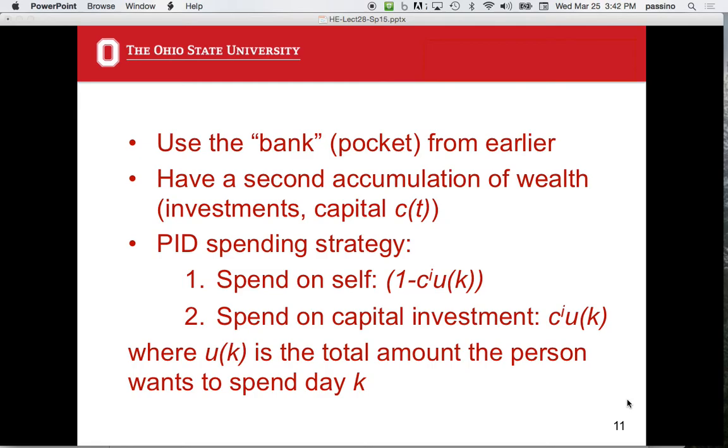The PI spending strategy is going to do the following. I'm going to take 1 minus CIU of K and spend it on myself. And I'm going to spend CIU of K on my capital investment. So if you add these up, I've got to check the math here. I think I might have typed this wrong. I'll check it and get back to you. Where UK is a total amount. Now, what I'm saying here is that I'm using CI, I'm taking a certain amount of money. At the end of the day, after I've made my money, I pull my money out of the pocket. I look at my capital and I say, okay, how much am I spending on eating for my family versus buying another tractor or another rake or another shovel? What percentage am I going to spend on each? CI just represents that percentage.